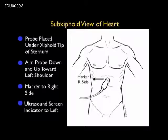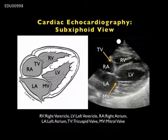The next cardiac imaging window is the subxiphoid. The probe is placed under the xiphoid tip of the sternum, aiming down and up towards the left shoulder. We keep the marker dot on the probe towards the right side of the patient, with the caveat that the ultrasound screen indicator is positioned to the left of the screen. From this view we're looking from an inferior position up towards the heart, using the liver as our acoustic window. The right ventricle and right atrium are close to the probe, and further away are the left ventricle and left atrium. The tricuspid and mitral valves can also be seen from this view.